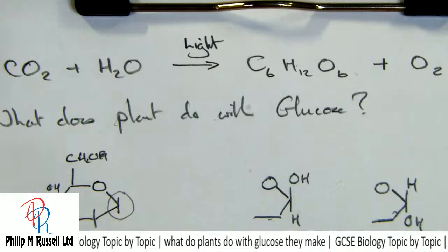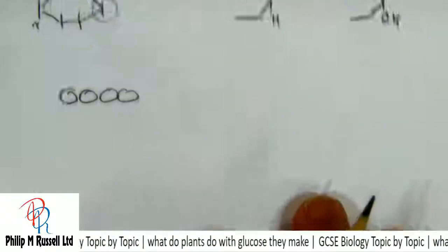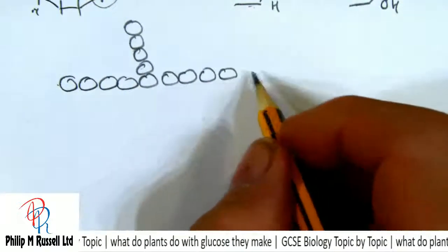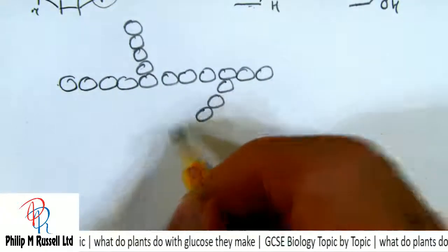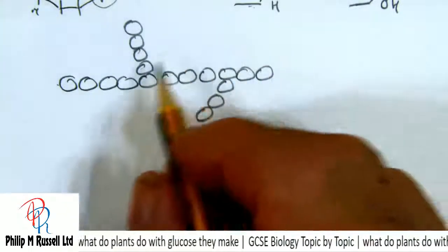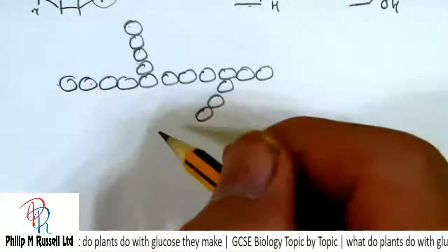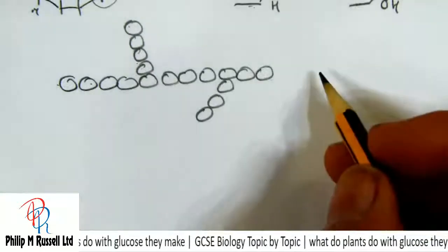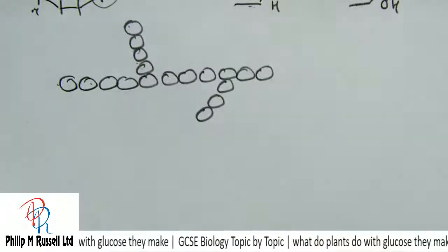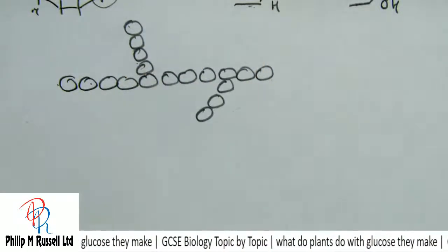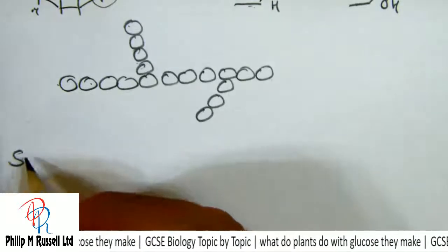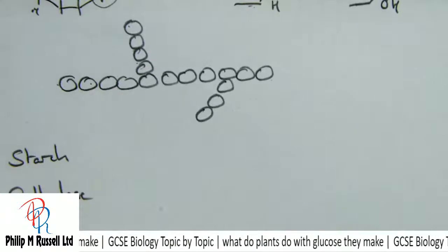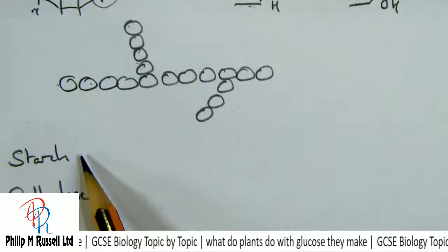If we have most of these glucoses joining together, they can form chains, and every now and again there are some branches possible on them. If there are branches, then it is easier to digest. This branched representation is more like what you have in the human body — something like glycogen. But in plants, the two main uses of glucose are starch and cellulose, both made from the same glucose molecules joined together.